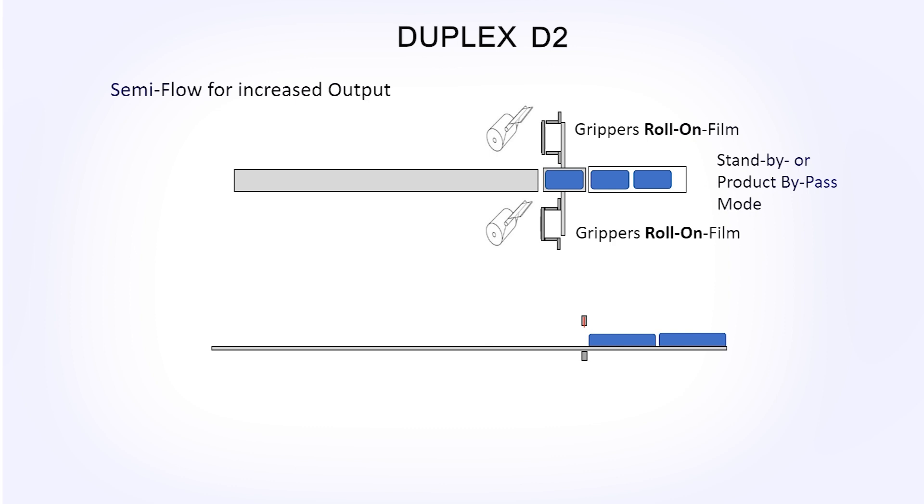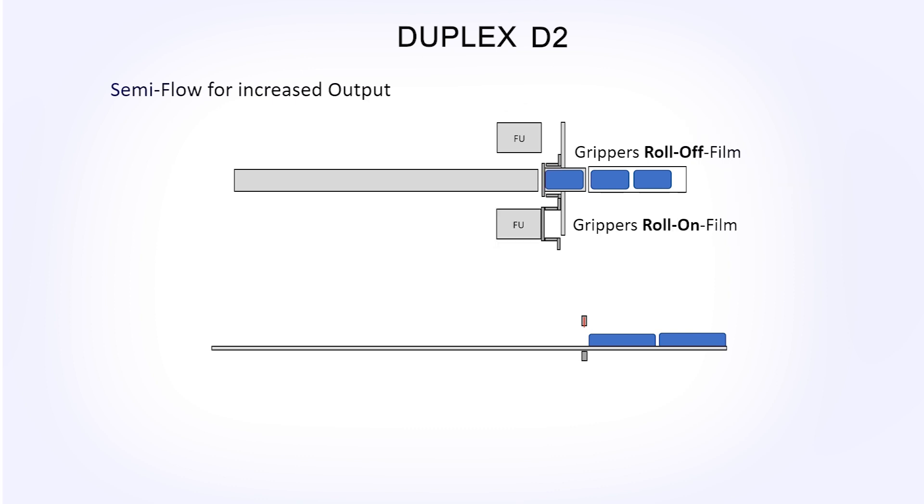In the following animation you will get this unique insight and also learn about the semi-flow function by Tentoma. The machine can be in standby or product bypass mode, and of course in full operation mode where film is rolled on and off like we saw in the beginning.